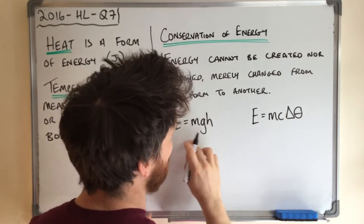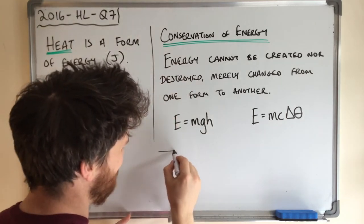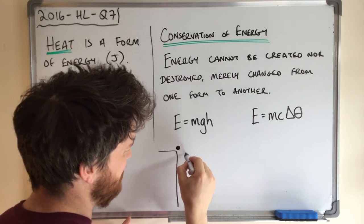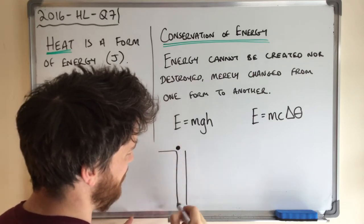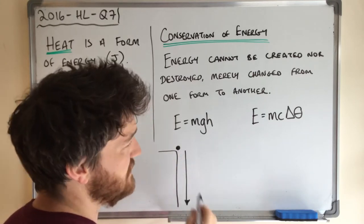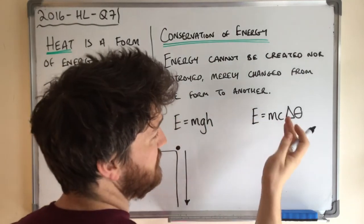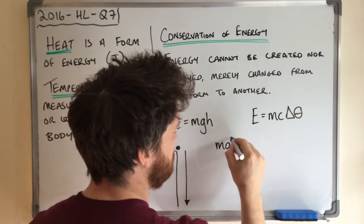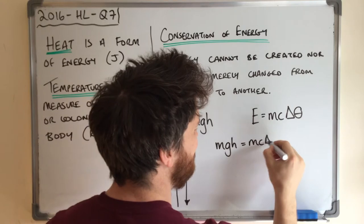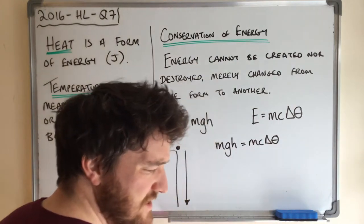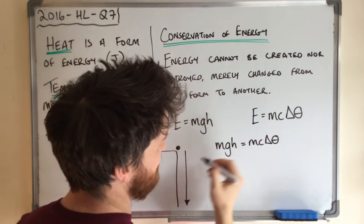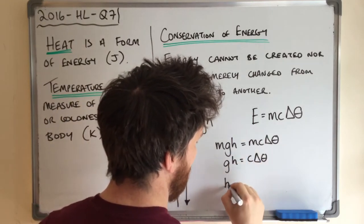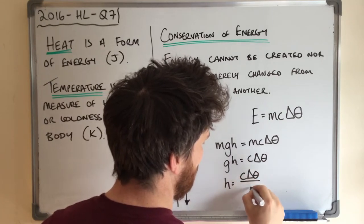Here's a side-on drawing of Niagara Falls — at the top it has all potential energy, and when it hits the ground all that energy is converted into heat energy. So we say mgh equals mc delta theta. Since the masses cancel, we get gh equals c delta theta, so h equals c delta theta divided by g.